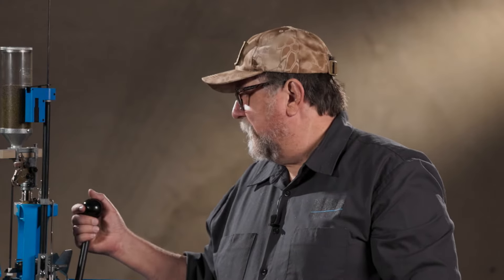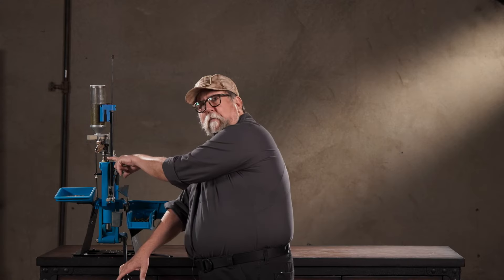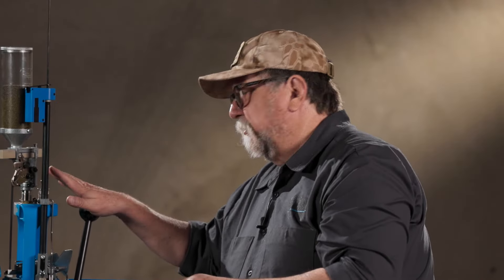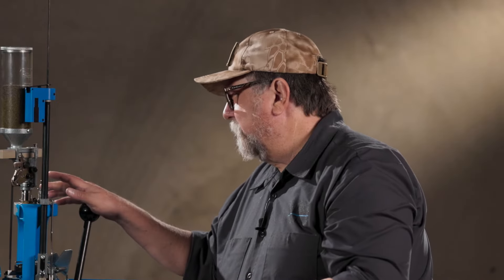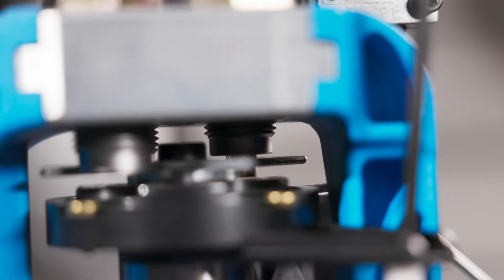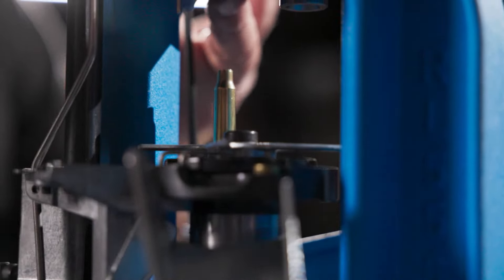On the 550C, downward handle motion moves the primer slide out, picks up a primer out of the primer magazine tube. You lift up, push forward on the handle, seat your primer. Your first station is going to resize and deprime the case, and then at the end of the upstroke you'll push forward to seat the primer. Then you manually advance the shell plate to the second station.